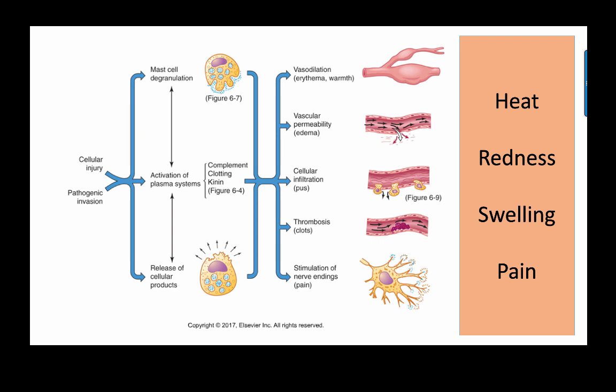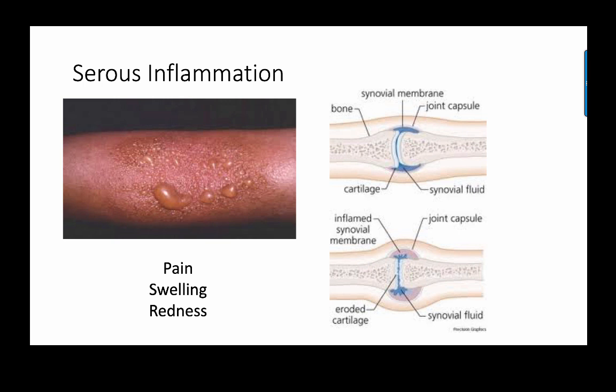The first type is serous inflammation — the mildest form. The serous exudate contains mostly protein and albumin; it is usually clear, similar to blood serum. It occurs very early in the inflammatory process and is typical of viral infections where there is no bacteria for macrophages to consume. On the skin, you see this as vesicles or blisters, such as from a sunburn. Inside body cavities, it appears as a yellowish or clear collection of fluid seeping into organs, tissues, or spaces.